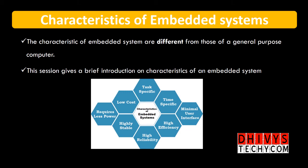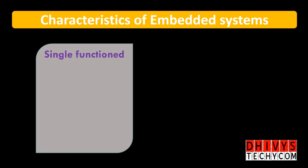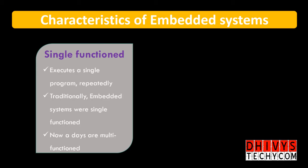Getting into the video, we have three different categories. The first important category of characteristics is single function. For example, when embedded systems come to our market, even the devices have single function. For example, mobile phones — call or use it. Washing machines have one way to do it. It has single function.